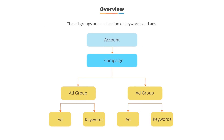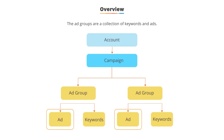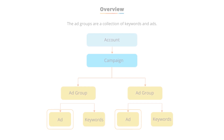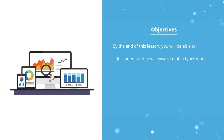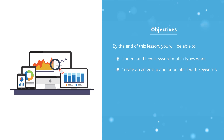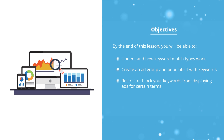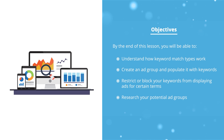An ad group is a collection of keywords and ads. The first step is to choose keywords that will cause your ads to show. In this video, we're going to show how to choose keywords, how keywords can match to search terms, and how to start organizing your ad groups. By the end of this lesson, you'll be able to understand how match types work, create an ad group, populate your ad groups with keywords, know how to block your keywords from showing ads for certain terms, and research potential ad groups and keywords.